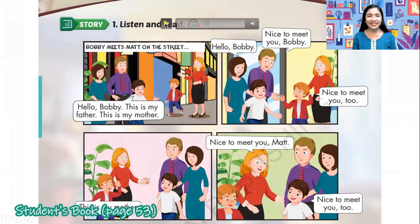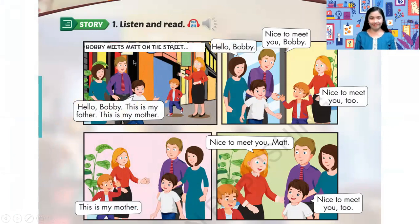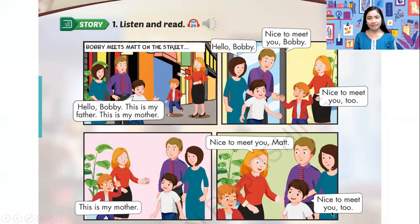Listen and read. Story 1. Bobby meets Matt on the street. Hello, Bobby. This is my father. This is my mother. Hello, Bobby. Nice to meet you, Bobby. Nice to meet you, too. This is my mother. Nice to meet you, Matt. Nice to meet you, too.